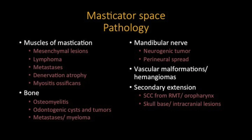Once we understand the anatomy and contents, we know the various pathologies that can occur in this space. They could arise from the muscles of mastication — mesenchymal lesions, metastasis, myositis, denervation atrophy. From the bone — osteomyelitis, odontogenic cysts, tumors. From the nerve — neurogenic tumors primarily or perineural spread of tumors arising in this space. From vascular components — vascular malformations and hemangiomas. And secondary extension of disease from the retromolar trigon, oropharynx, or even the skull base.